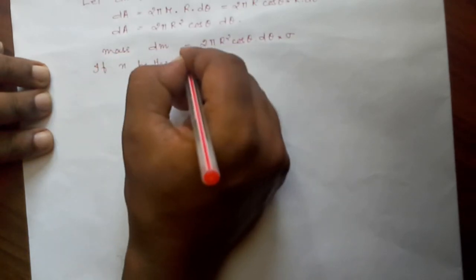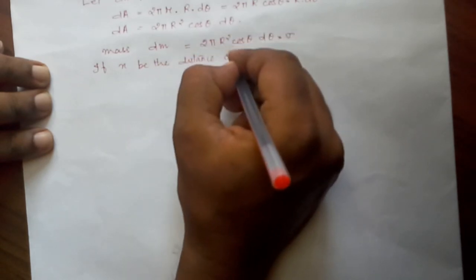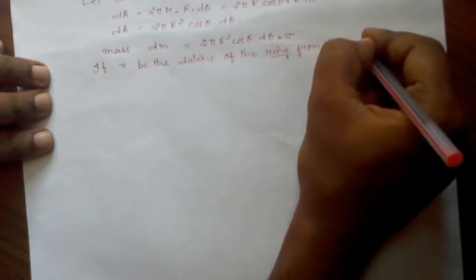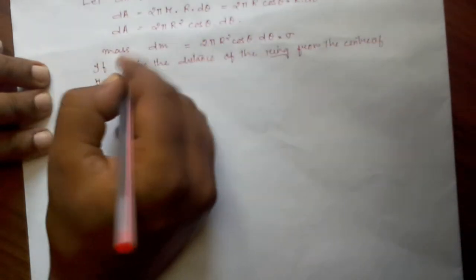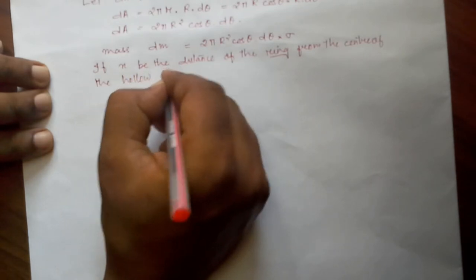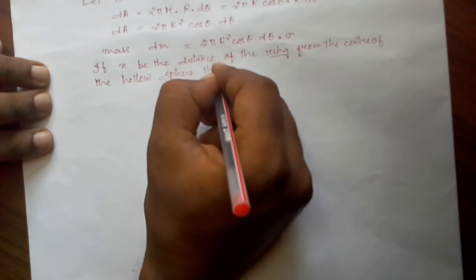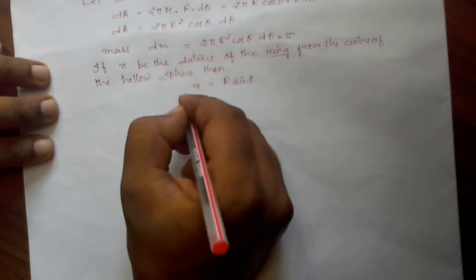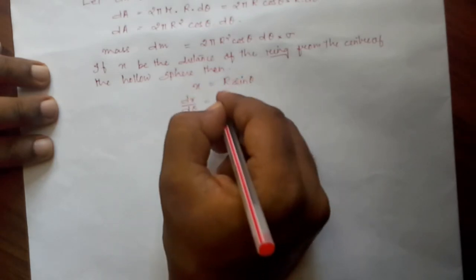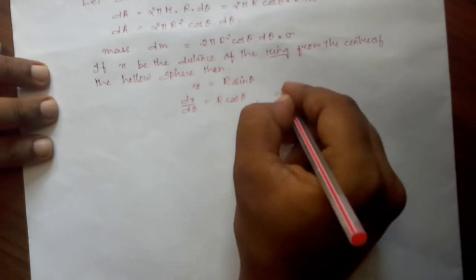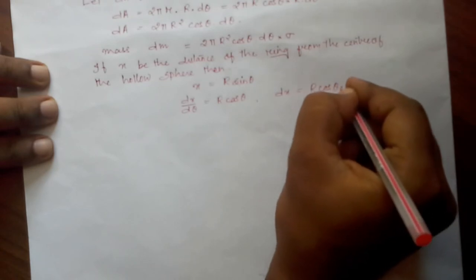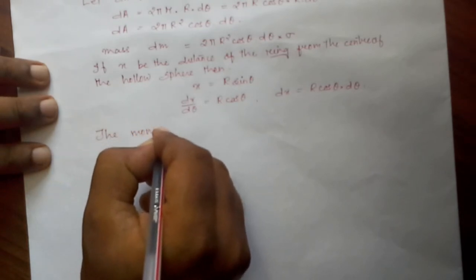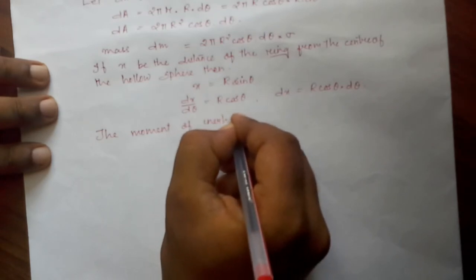If x is the distance of the ring from the center of the hollow sphere, then we can write x = r·sinθ. Differentiating x with respect to θ, we get dx/dθ = r·cosθ, or equivalently dx = r·cosθ·dθ.